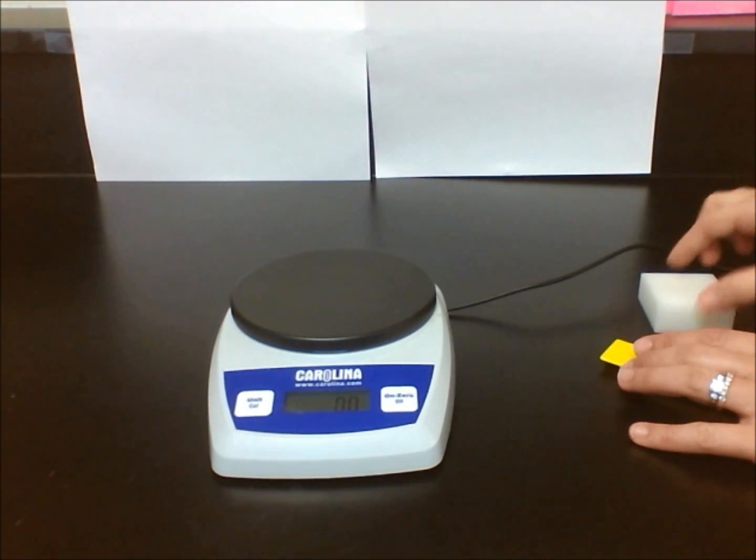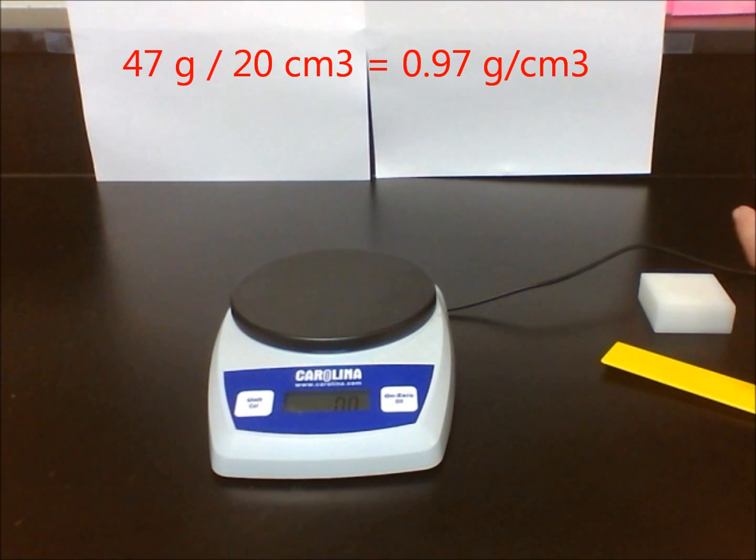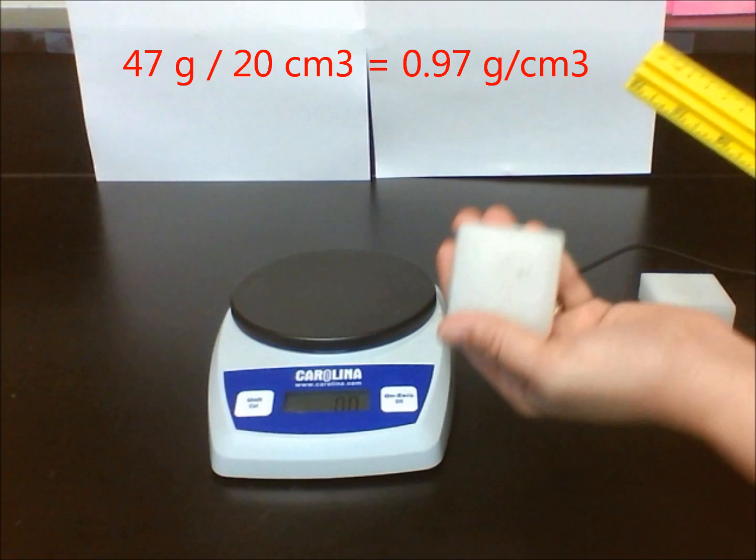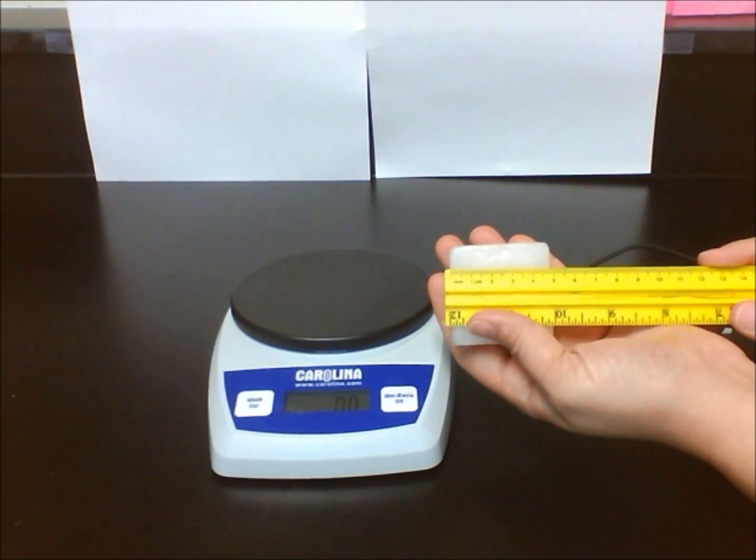Once I have found the mass and volume, I can now calculate my density. I can take my mass, divide it by my volume to find the density. I am going to repeat these steps for the rest of the blocks.